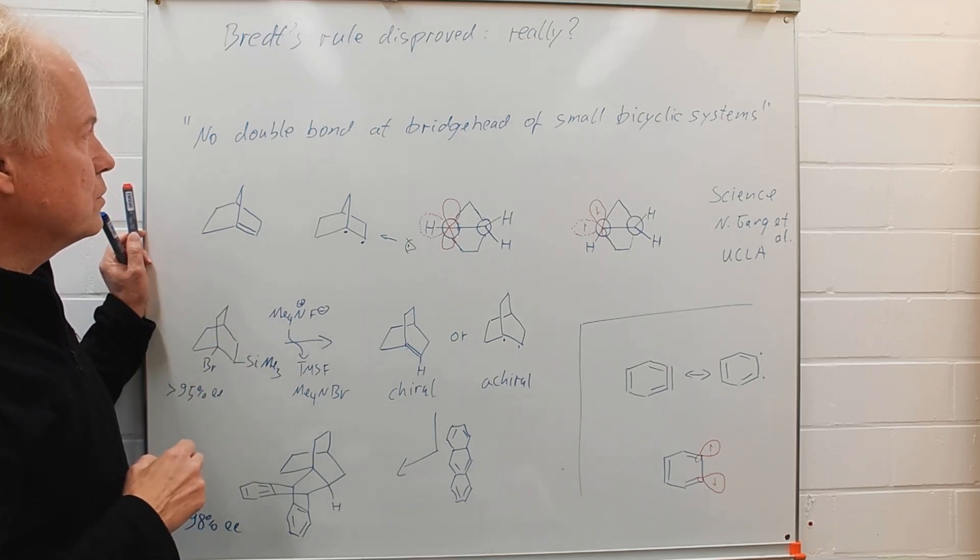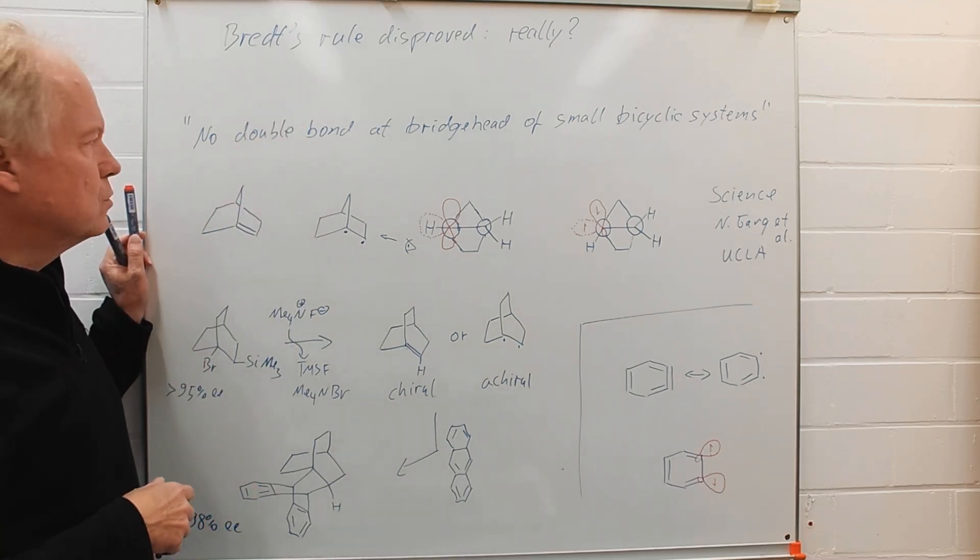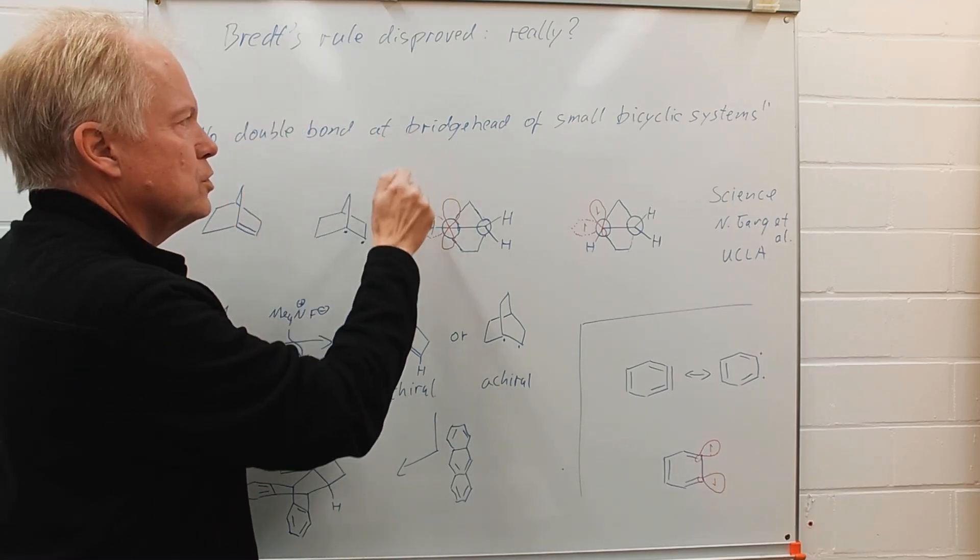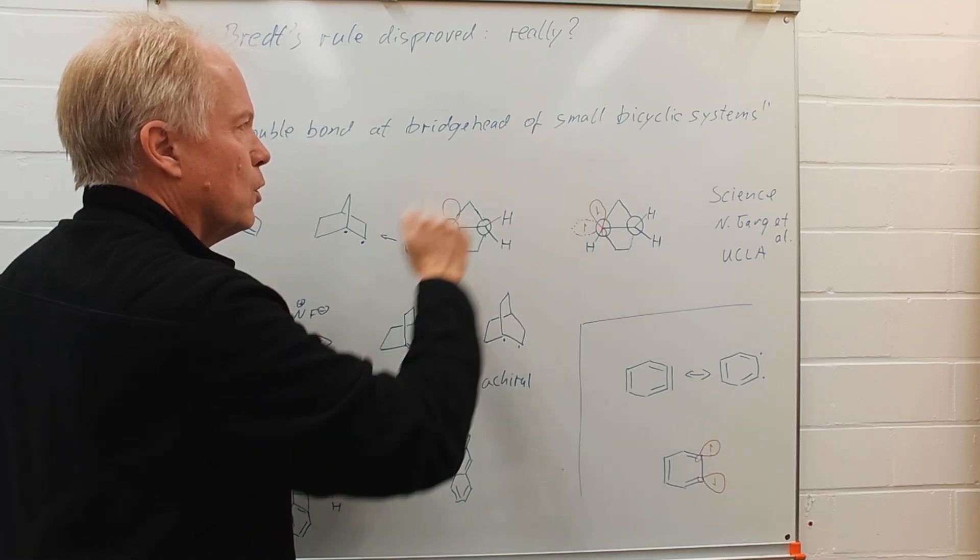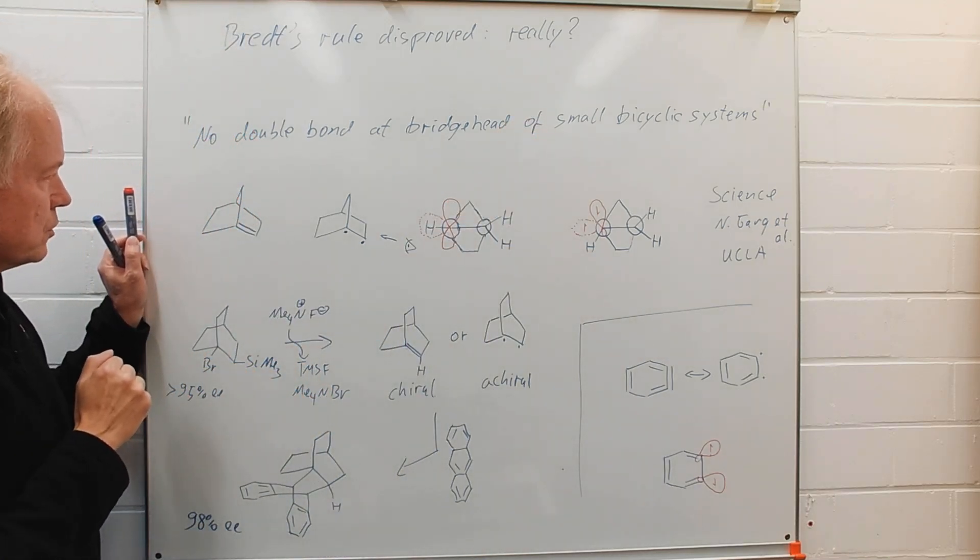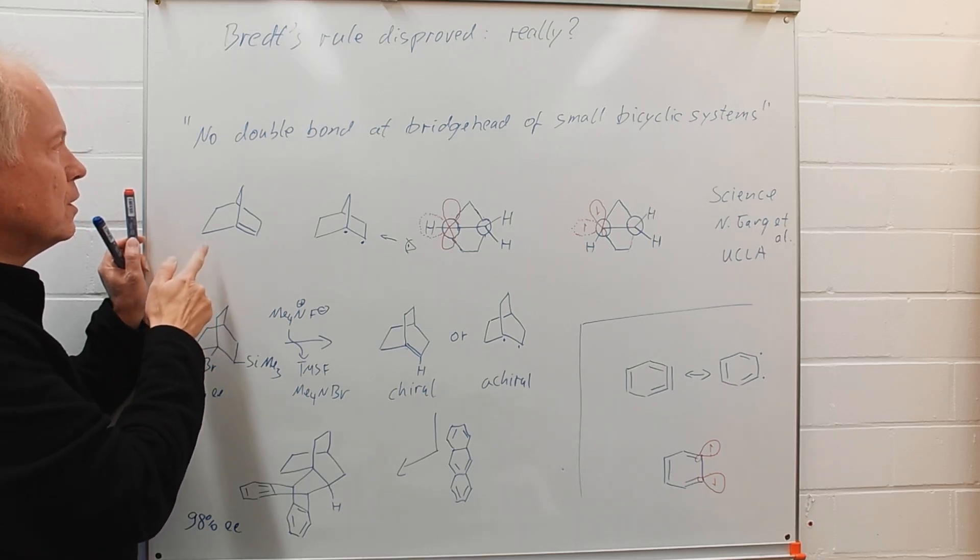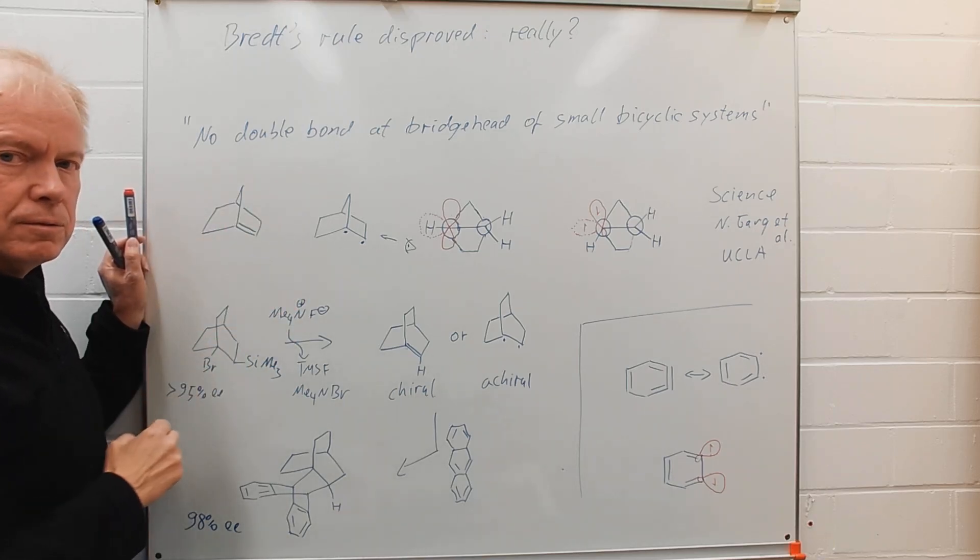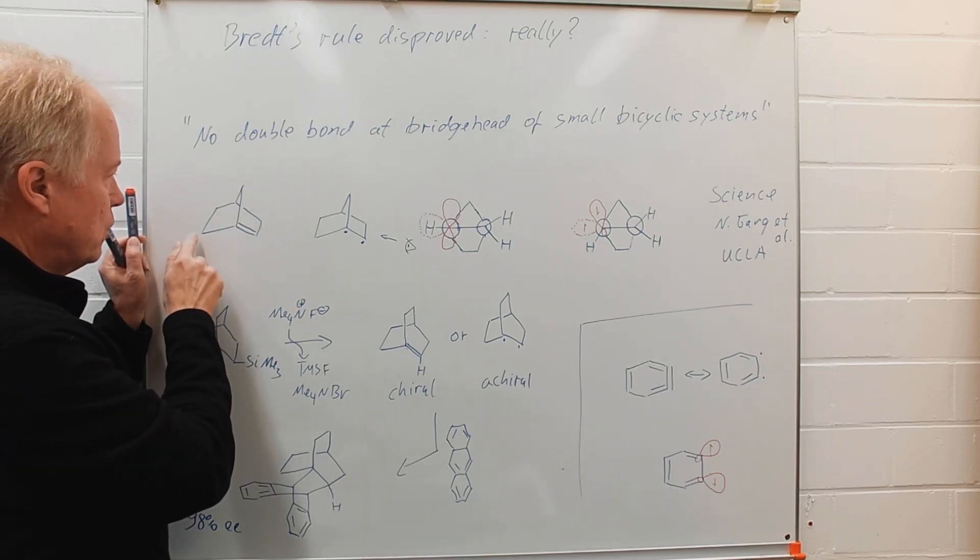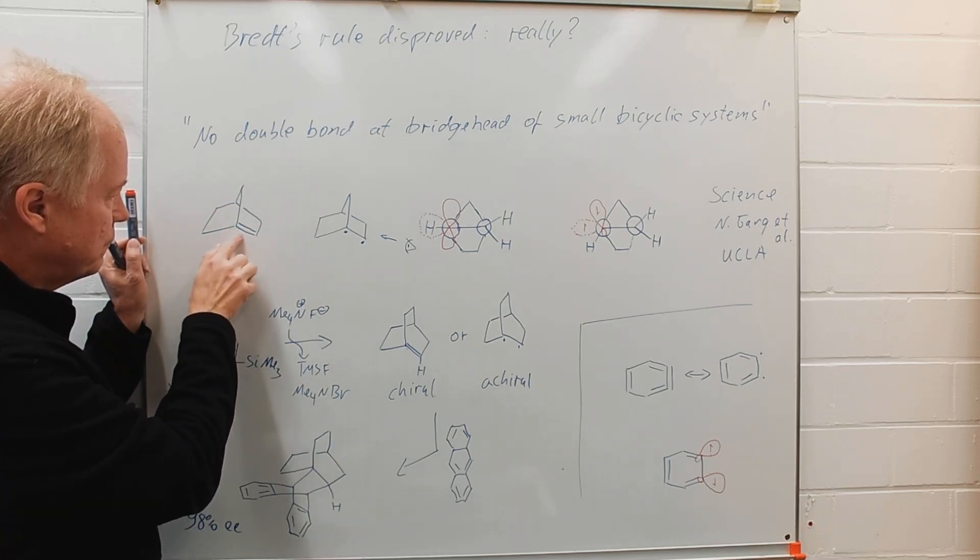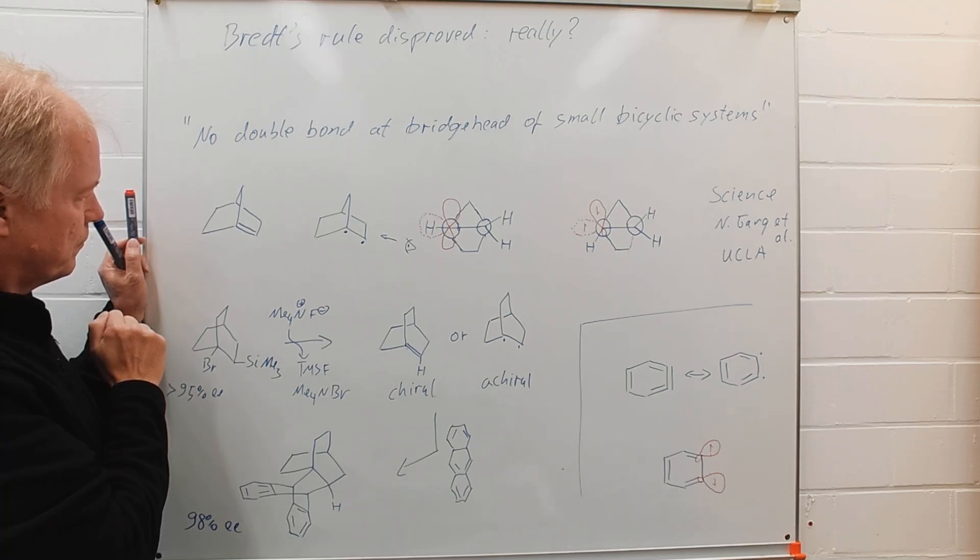Very interesting findings, but first of all what is Bredt's rule all about? No double bond at bridgehead of small bicyclic systems, and the best example for such an anti-Bredt molecule would be 1-norbornene here with a double bond at bridgehead position.